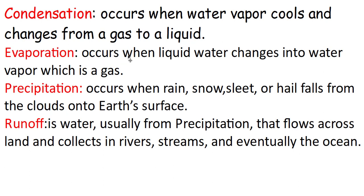Evaporation: liquid water changes into water vapor, which is gas — liquid changes into gas. Precipitation: rain, snow, sleet, or hail falling from clouds onto the earth's surface. Clouds are made by gases — gas changes into liquid, or snow, or sleet — that is called precipitation.